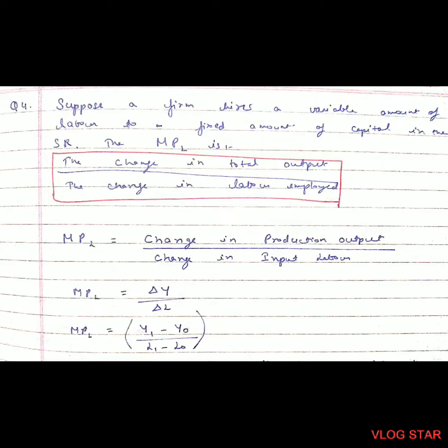Question 4: Suppose a firm hires a variable amount of labor with a fixed amount of capital in the short run. The marginal product of labor equals the change in total output divided by the change in labor employed. As we know, marginal product of labor (MPL) equals change in production output divided by change in input labor, denoted as MPL = ΔY / ΔL, where Δ denotes the change.